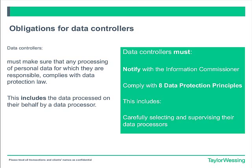Data controllers must comply with all aspects of the DPA, including carefully selecting and supervising the data processors they appoint. Importantly, data controllers must notify the Information Commissioner, and it is a criminal offence to fail to register where required. The notification includes a general description of the personal data being processed, the purposes for which it's processed, a description of recipients, any transfers outside the EEA, and general security provisions. It should be renewed every year. Data controllers must also comply with the eight data protection principles, which Sally will run through shortly.